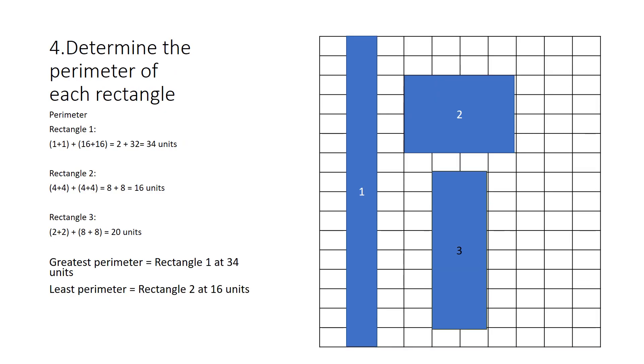After we have made all our rectangles with the same area, then we can start calculating our perimeter. Well, rectangle one has one and one on each side, and then 16 and 16 on each side. And then to find perimeter, what do you do? You add it all up, which equals 34 units. They're not squared because it's not the area we're finding. It's the perimeter.